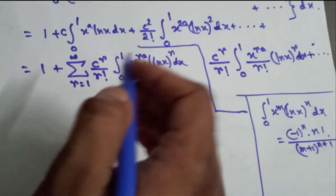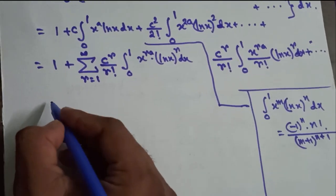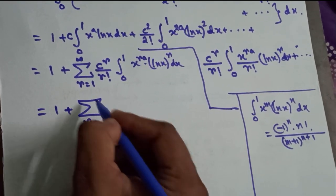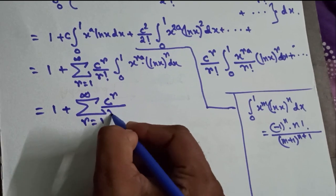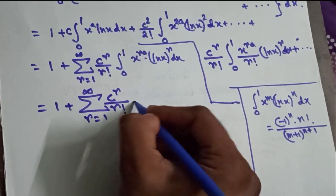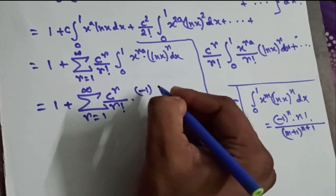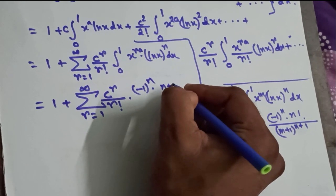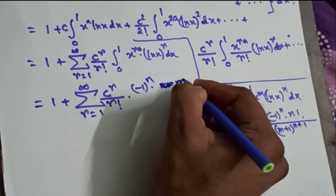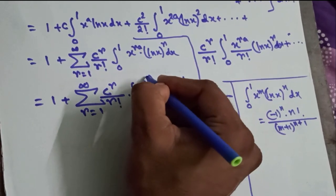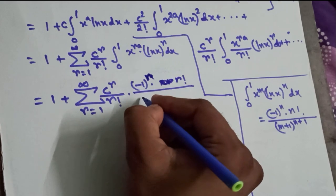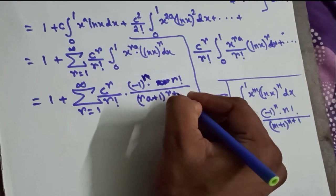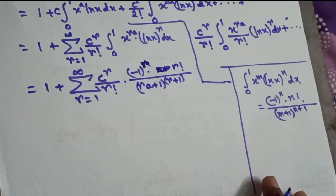Substituting the known result, we get: 1 plus the summation from r = 1 to infinity of c^r / r! times (−1)^r · r! / (ra + 1)^(r+1). The r! in the numerator and denominator cancel, giving us a clean series expansion.